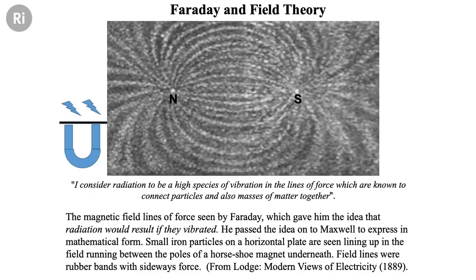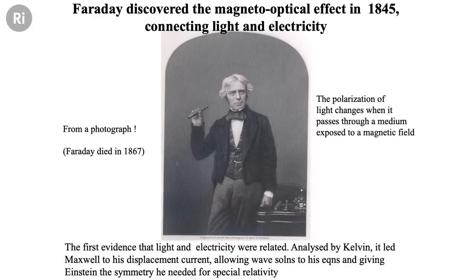He thought that there were lines of tension in this ether which were responsible for radiation. That's an incredible statement for such an early time. He discovered another effect — the magneto-optical effect — which Martin showed me before the talk. This was basically that when light goes through certain kinds of stuff and you put a magnet near it, it rotates the plane of polarization of the light. Why was that important? Because at that time, there was no connection whatsoever between electricity and light.